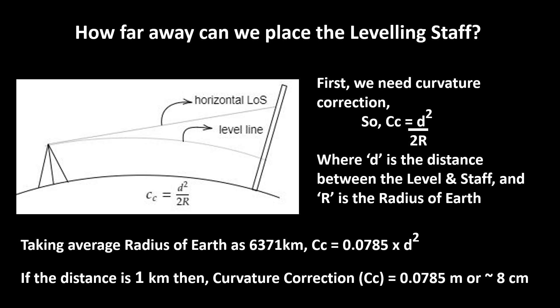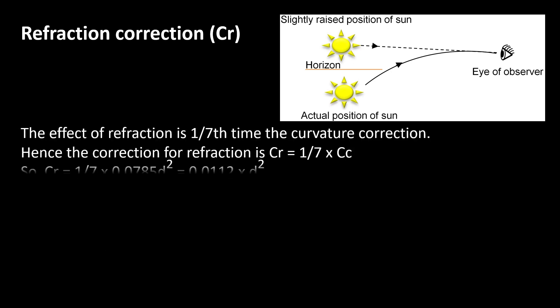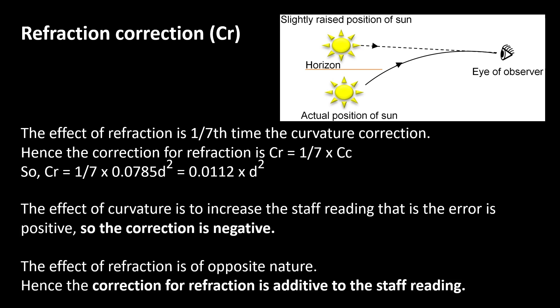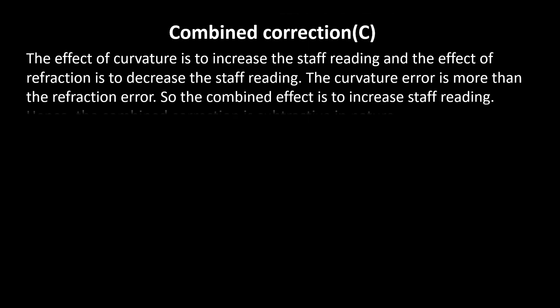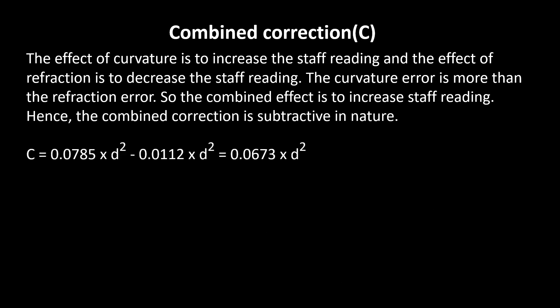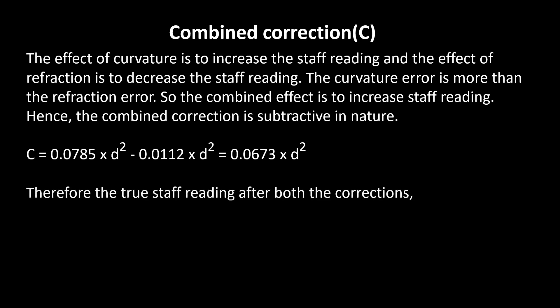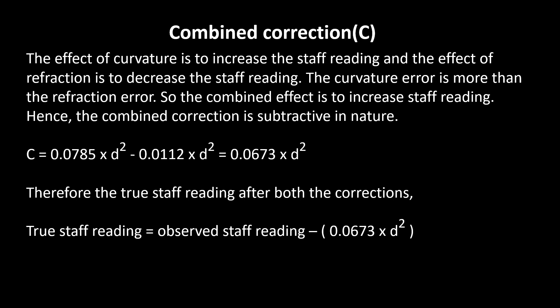For example, if the distance is 1 km then we need to apply 8 cm of correction to our staff reading. Then there is refraction correction. This correction is 1/7th of the curvature correction, or about 0.0112 multiplied by d². In 1 km distance this is equivalent to about 1 cm. We apply negative curvature correction and positive refraction correction, so the combined correction comes to 0.0673 multiplied by d², which you need to deduct from the observed staff reading. In a 1 km long distance shot you need to subtract 6.7 cm.